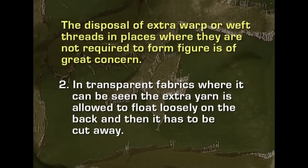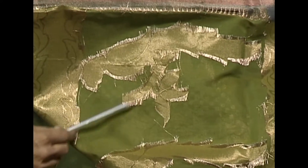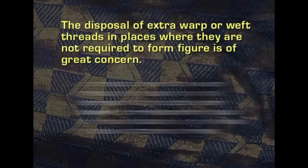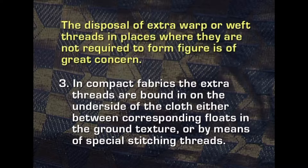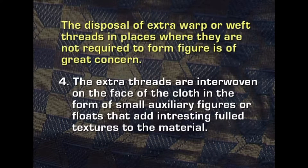In transparent fabrics where it can be seen, the extra yarn is allowed to float loosely on the back and then it has to be cut away. Simply cutting and leaving it will not be sufficient; we have to either stitch the edges or embed it in some way so that there will be durability of these figures on the face of the fabric. If stitching is not done, the upper yarns will come out from the figures and the fabric may become very unsightly. In compact fabrics, the extra threads are bound in on the underside of the cloth either between corresponding floats in the groundwork texture or by means of special stitching threads. The fourth way of disposing the unwanted floats is that the extra threads are interwoven on the face of the cloth in the form of small auxiliary figures or floats that add interesting fold textures to the material.